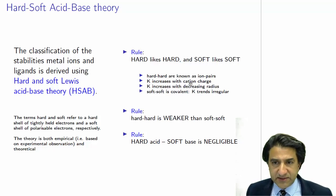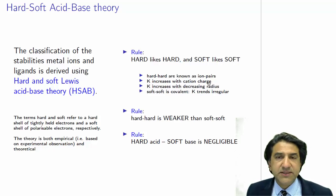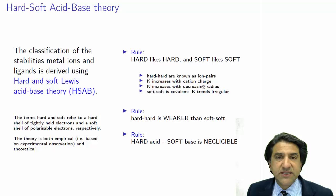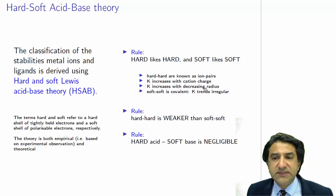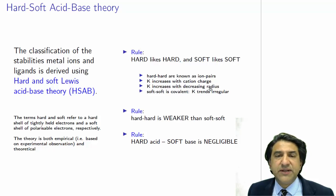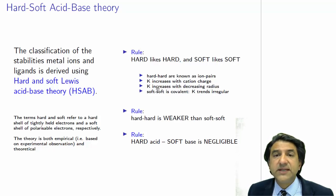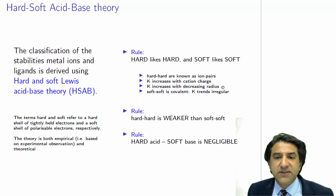In this case, K increases with the cation charge. So Fe²⁺ interacting with a hard ion will be weaker than Fe³⁺; Fe³⁺ has a stronger interaction with a corresponding negative ion pair. K also increases with decreasing radius — that's charge density. A small ion which is negatively charged has more power to attract a positive one because it can get closer, forming stronger ionic interactions. Likewise, a small, highly positively charged ion can get close to a corresponding negatively charged species and will have a stronger interaction. So K increases with decreasing radius, or increasing charge density, for hard-hard interactions.